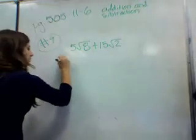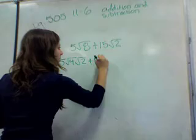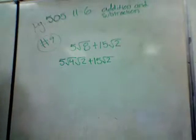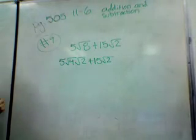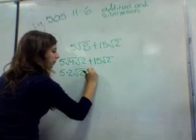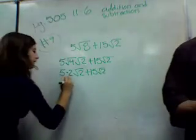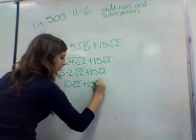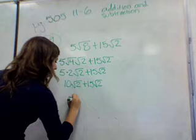It'll be 5 times root 4 root 2. Plus 15 root 2. Now, we know what root 4 is, so simplify that to 5 times 2 root 2. Again, we're writing out all the steps. And that equals 10 root 2 plus 15 root 2. And we're back to something that we know how to do. Because the root 2s are the same, we can combine them.